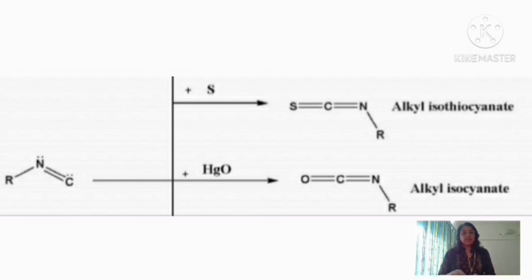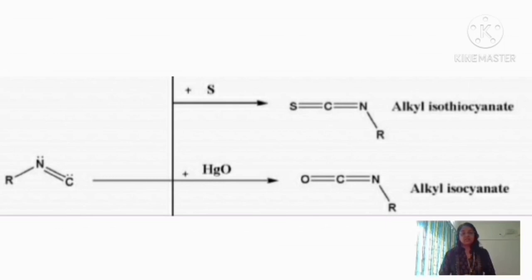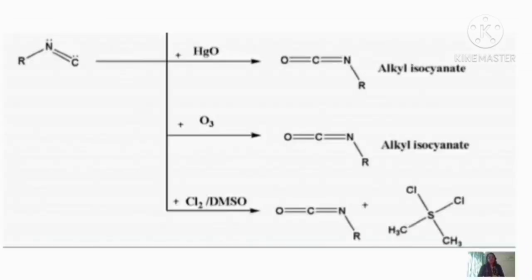When isocyanide reacts with mercuric oxide (HgO), oxygen bonds with the carbon completing its octet, forming isocyanate (R-N=C=O). When isocyanide reacts with ozone (O₃), alkyl isocyanate is again formed. Similarly, when isocyanide reacts with chlorine in the presence of DMSO (dimethyl sulfoxide) solvent, isocyanate is obtained as the main product.